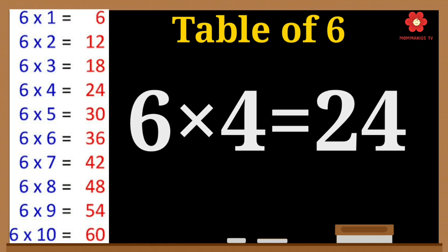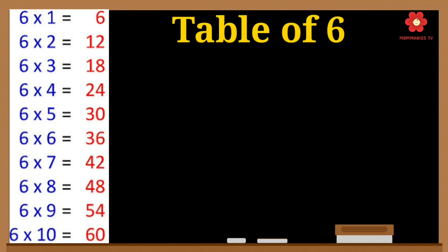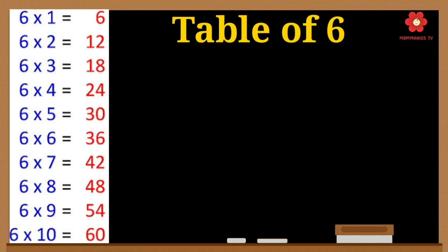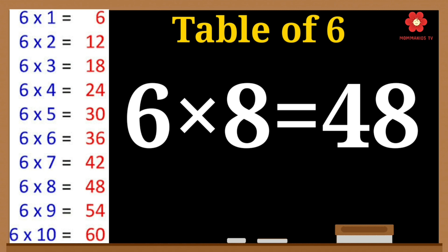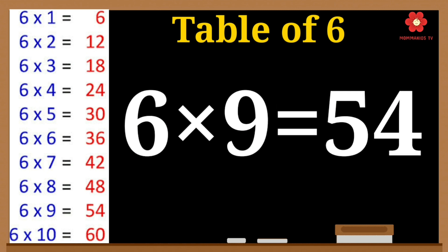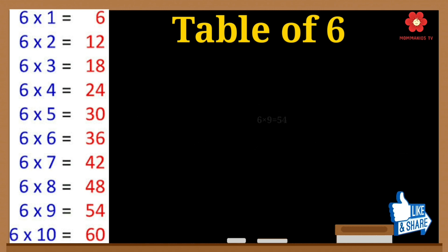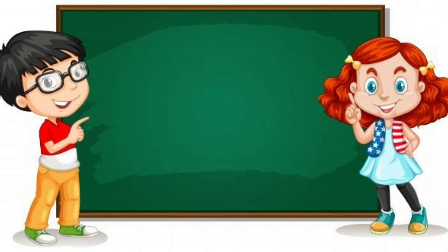6 fives are 30. 6 sixes are 36. 6 sevens are 42. 6 eights are 48. 6 nines are 54. 6 tens are 60.